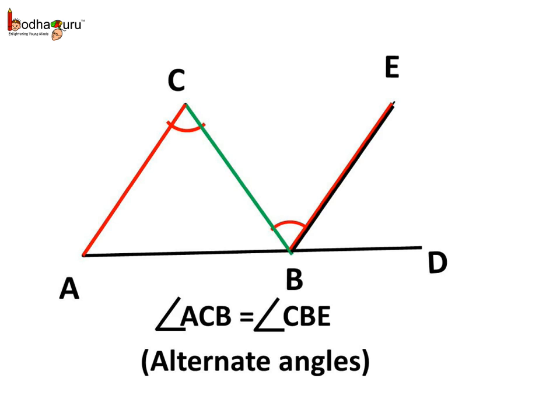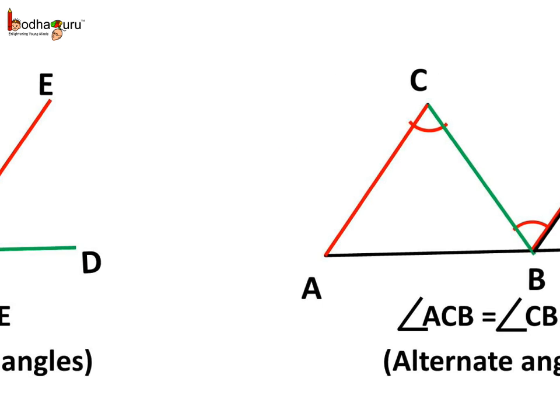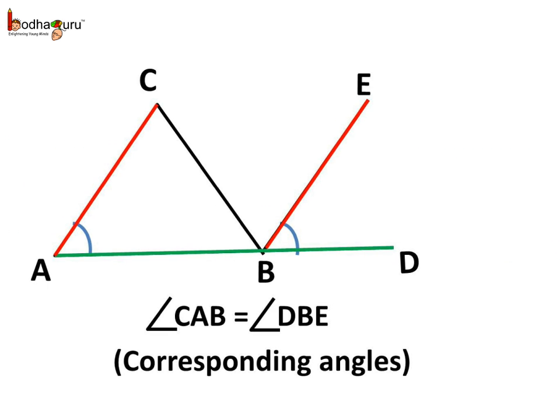Coming back to our problem: AC is parallel to BE, and BC is a transversal intersecting both the parallel lines. So, the alternate angles and the corresponding angles should be equal. Here, angle ACB is equal to angle CBE — because they are alternate angles. Again, AD is also a transversal intersecting the two parallel lines AC and BE. So the corresponding angles should also be equal. Here, angle CAB is equal to angle DBE — because they are corresponding angles.